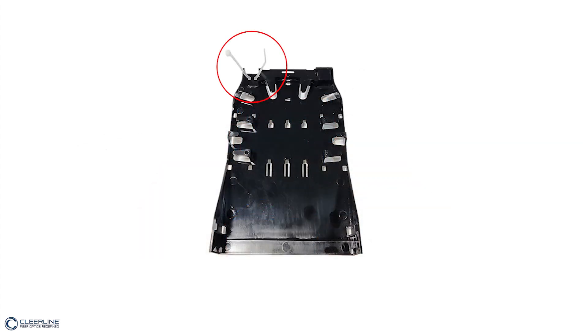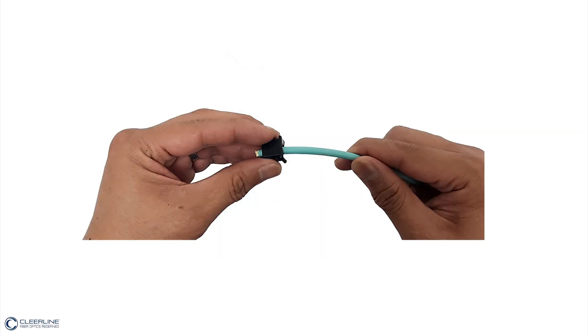Next, pre-install one zip tie to the cable entry point. In this case, I will be using the left entry point. Remove grommet from cable entry and cut the grommet using snips, creating an opening for your cable and slide onto fiber.